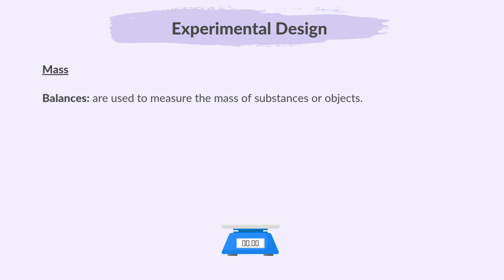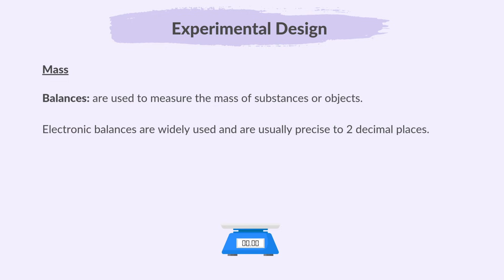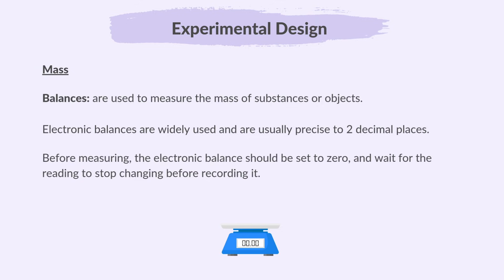Balances are used to measure the mass of substances or objects. Electronic balances are widely used and are usually precise to two decimal places. Before measuring, the electronic balance should be set to zero and wait for the reading to stop changing before recording it. Mass is measured in grams.